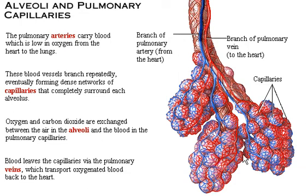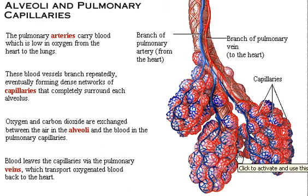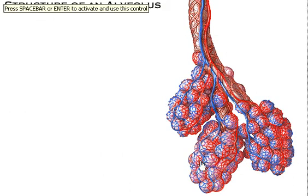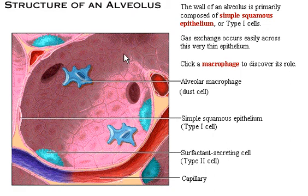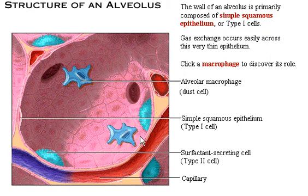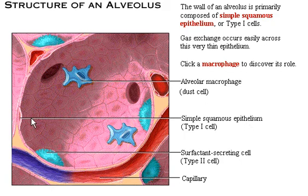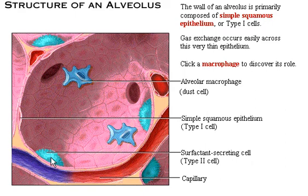Now let's look at what the alveoli consist of and how the inside of the alveoli looks. Three types of cells make up the alveoli. The wall of the alveoli consists of simple squamous epithelial cells throughout. In addition to the simple squamous epithelium, there are two other types of cells: macrophages, which are responsible for defense, and surfactant-secreting cells, which we will look at later.